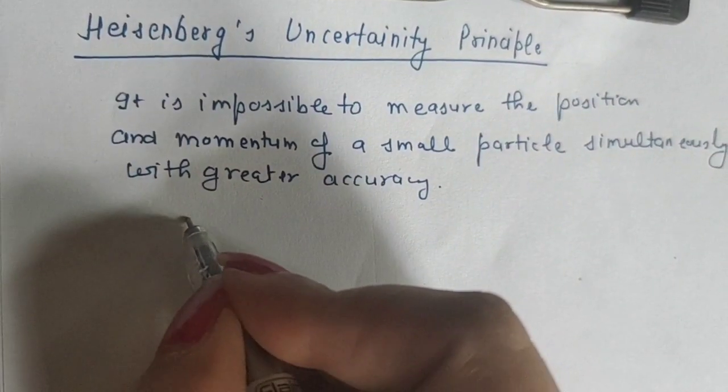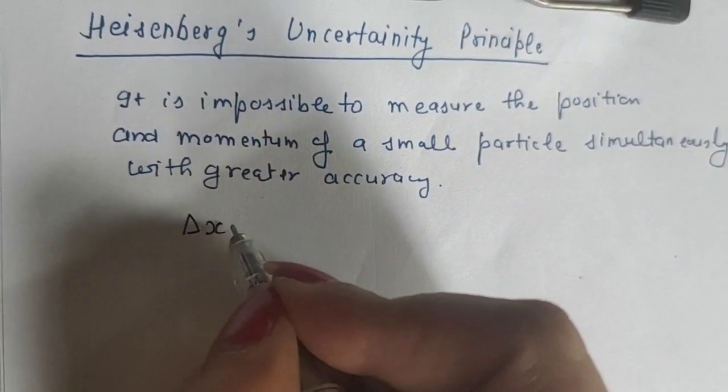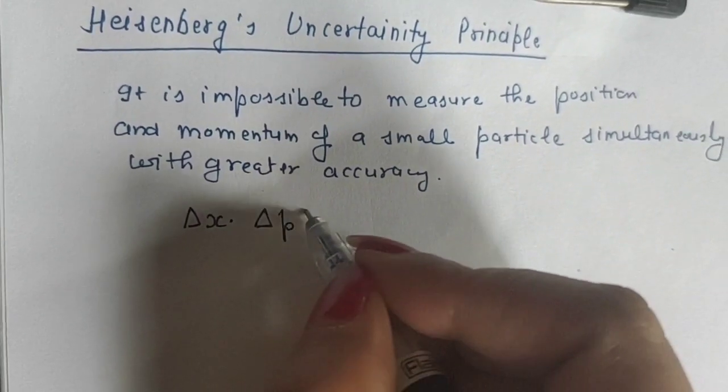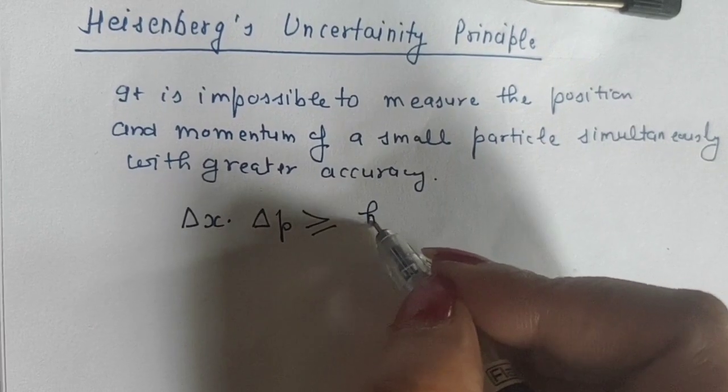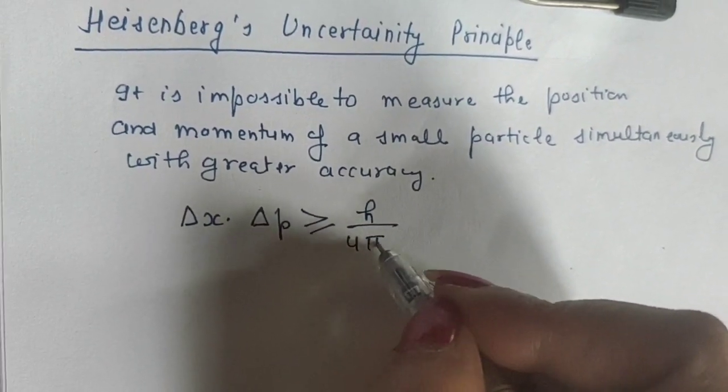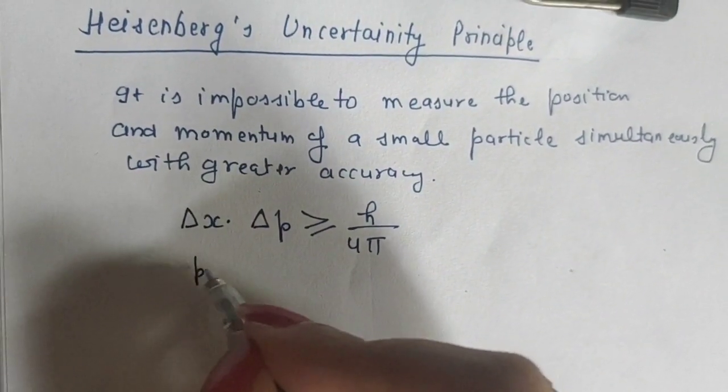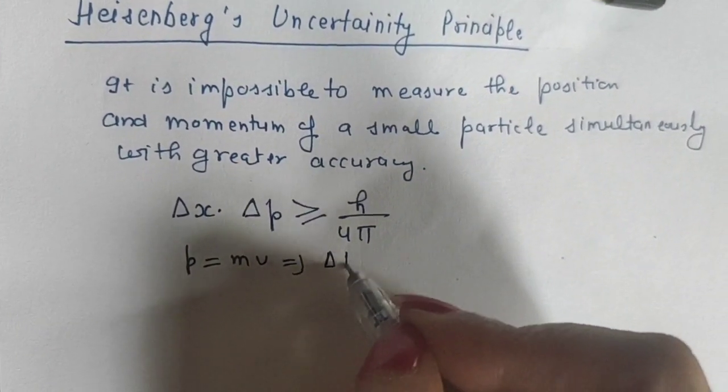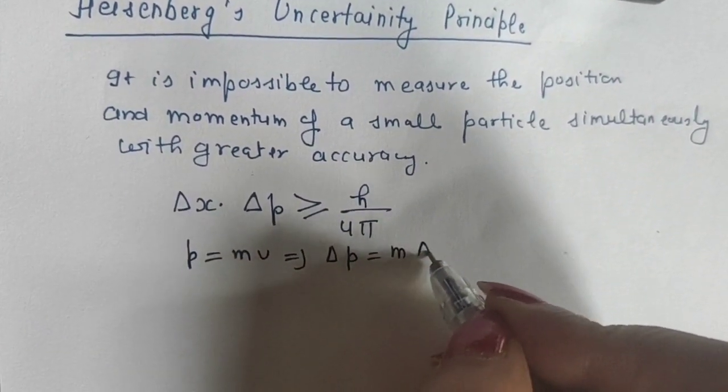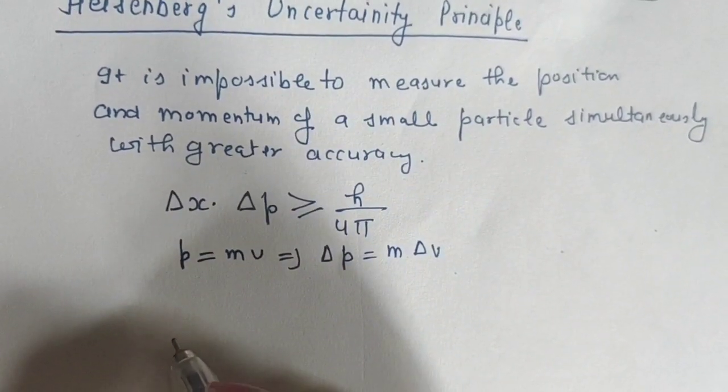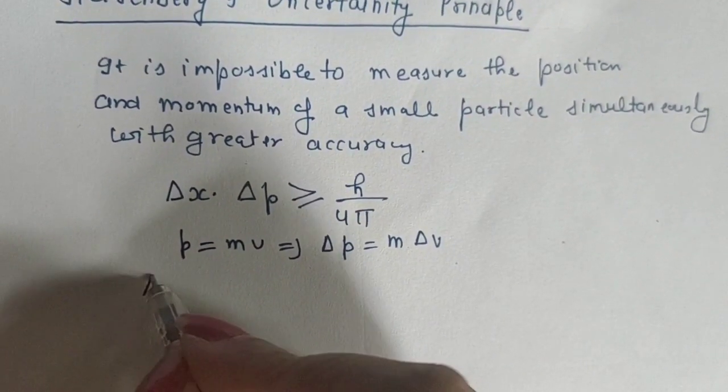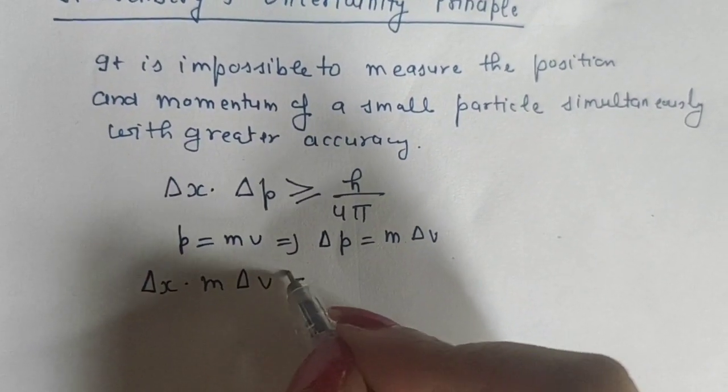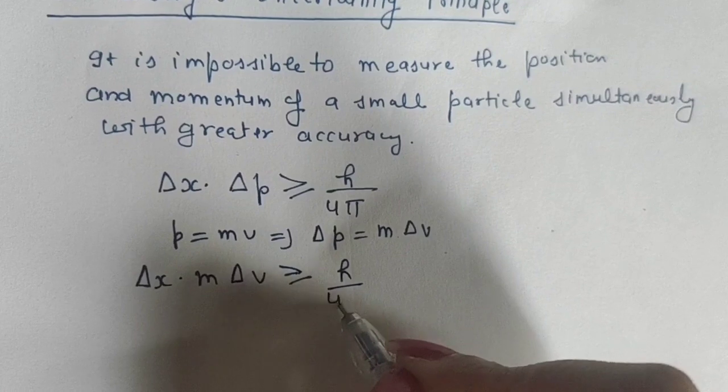Mathematically, Heisenberg said the product of uncertainty in position and momentum, Δx·Δp, is greater than or equal to h/4π. As we know, p is the product of mass and velocity, so Δp = mΔv. Because mass is constant, Δx·mΔv ≥ h/4π.